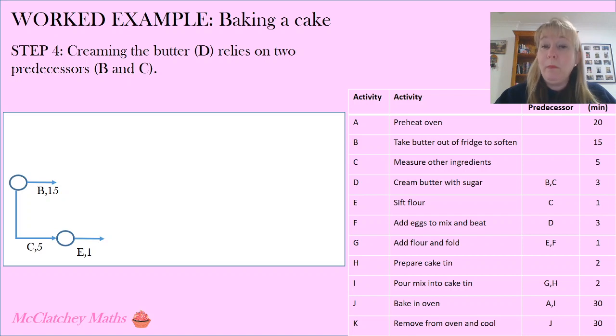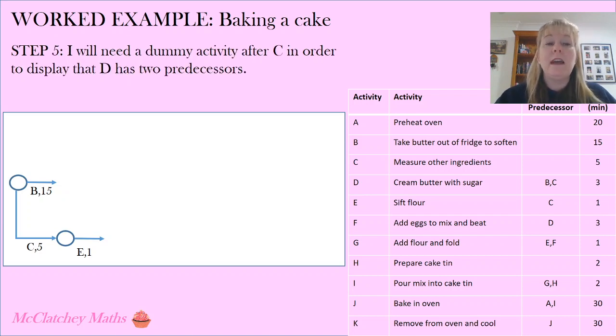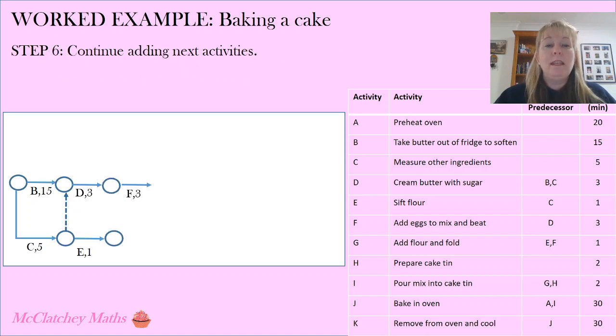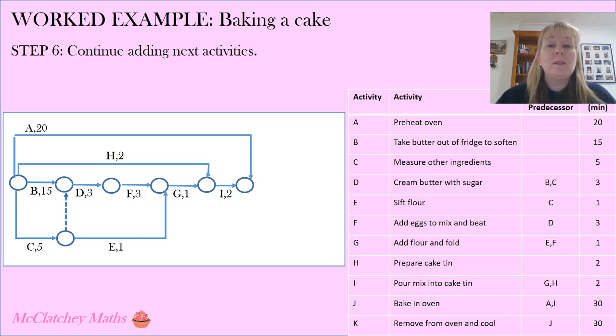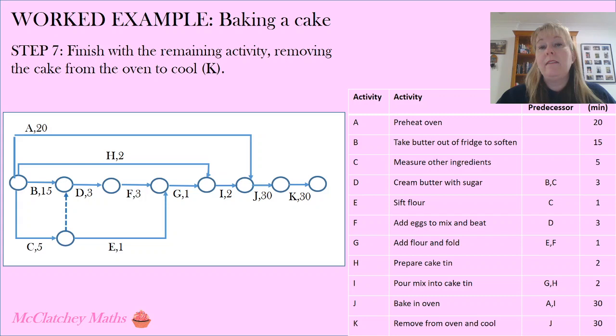Now activity C is a predecessor for sifting the flour. So we can draw that one in fairly easily. But creaming the butter relies on two predecessors, B and C. So here's where I'm going to put my dummy activity in after C so that I can display that information. And there's activity D coming out of there. Now I'm going to pop in my next activity which is going to be adding the eggs to the mix. And because that now creates the end of that parallel process C and E, they're all going to be putting the flour into the cake mix now. So we can bring that along and we're going to add that flour and fold it in. Now I'm going to start adding in those other activities that come out of my initial vertex. I've got activity H which was preparing the cake tin. And this is the point where I actually need to start pouring the cake mix into the cake tin. And I'm going to pop, preheat the oven in. That was my very first activity as well that took place alongside activities H, B and C. And now that the oven is hot, I can put the cake into the oven. And then I can remove it from the oven and let it cool and then eat it which is my favourite part.